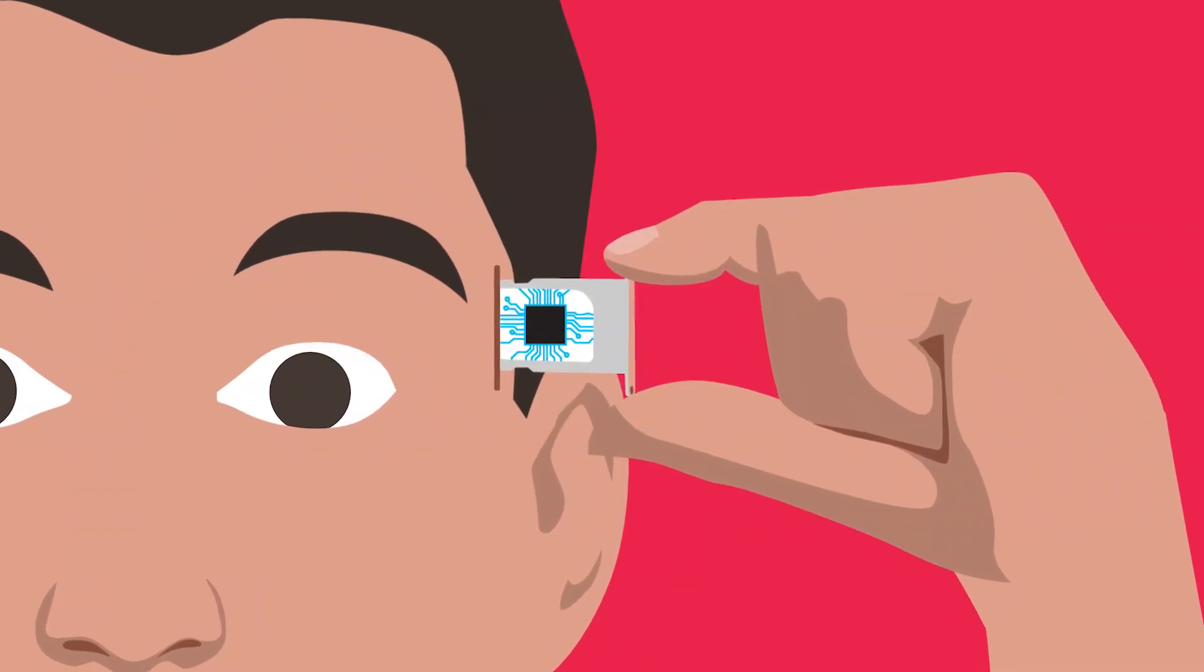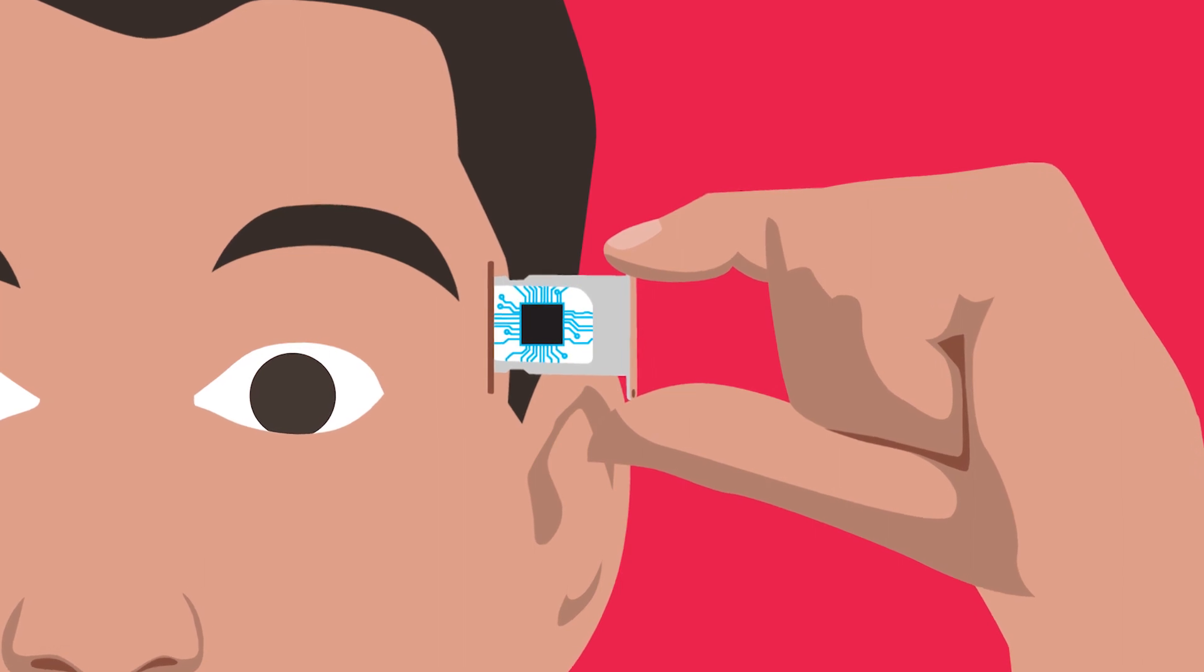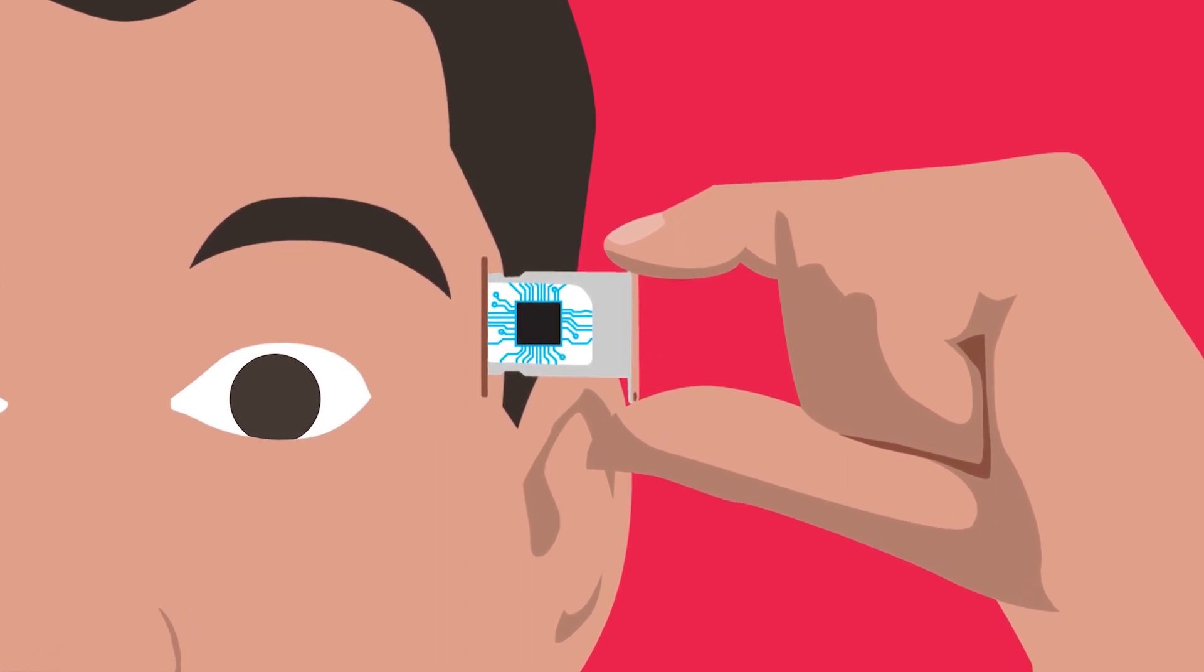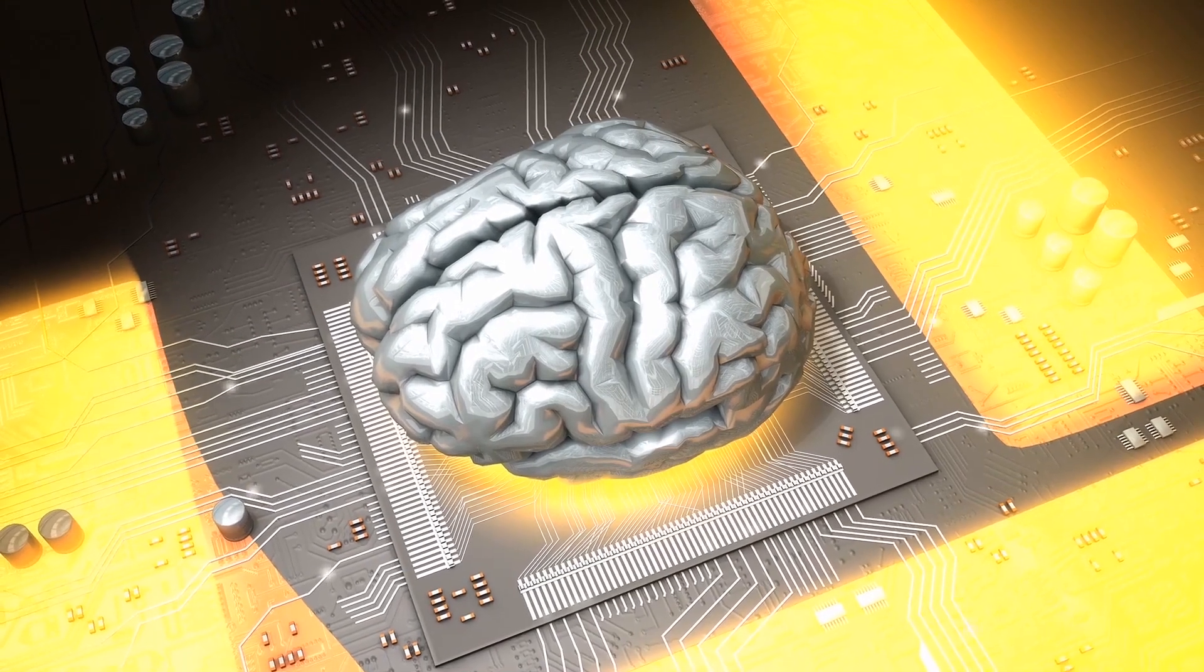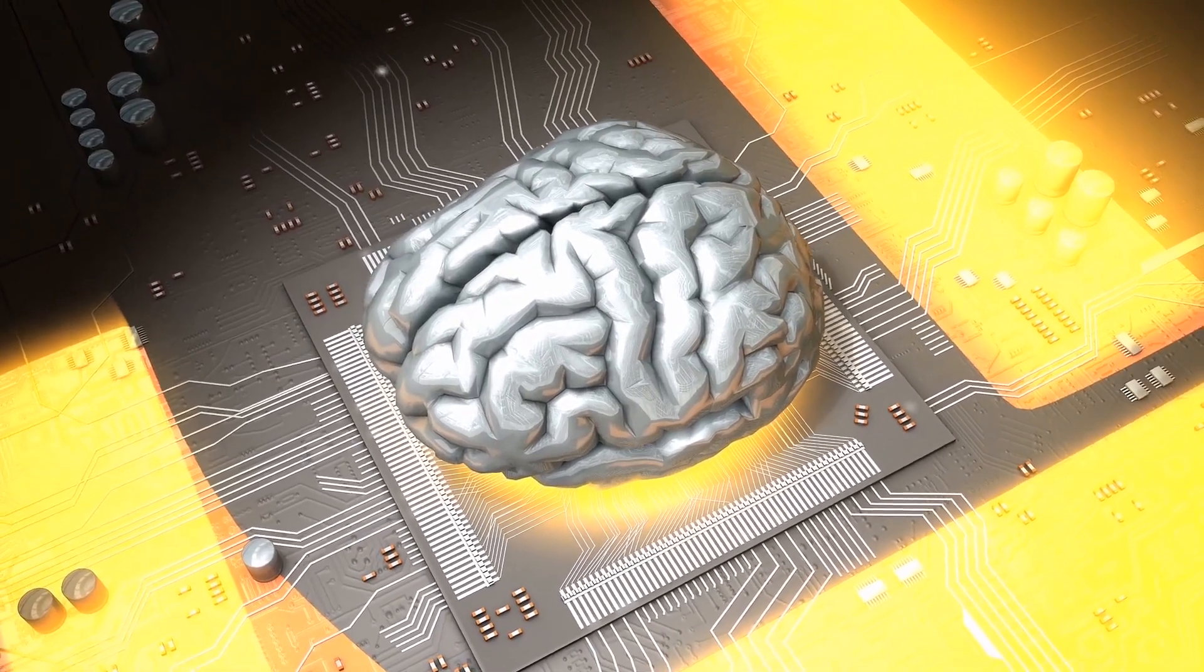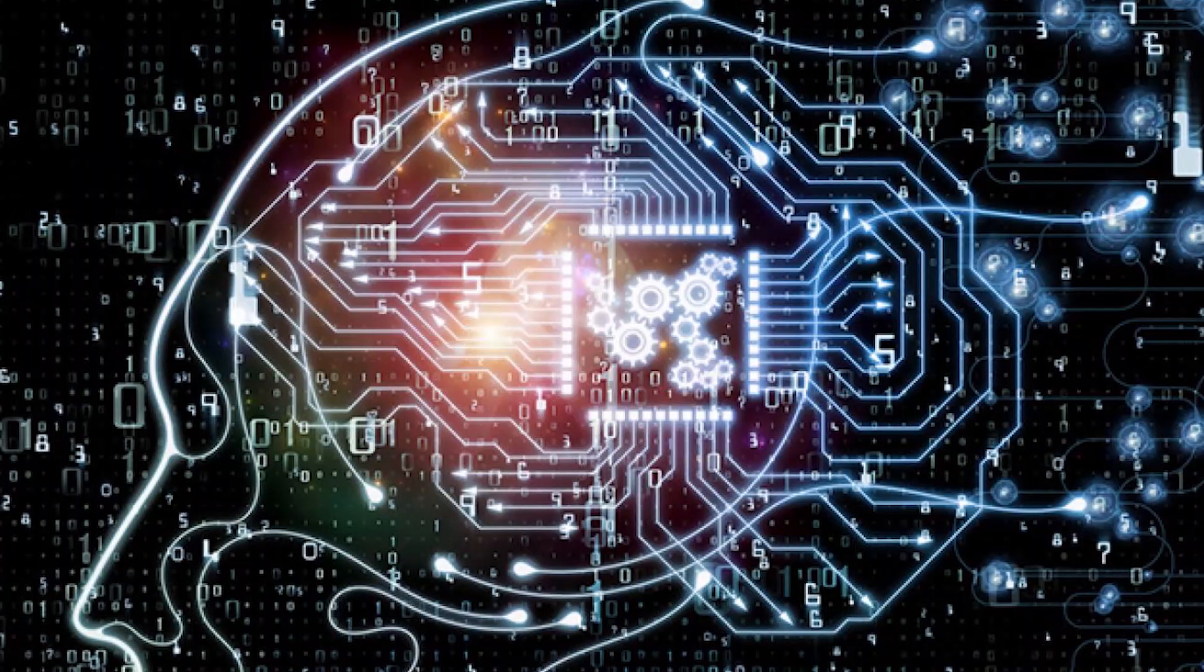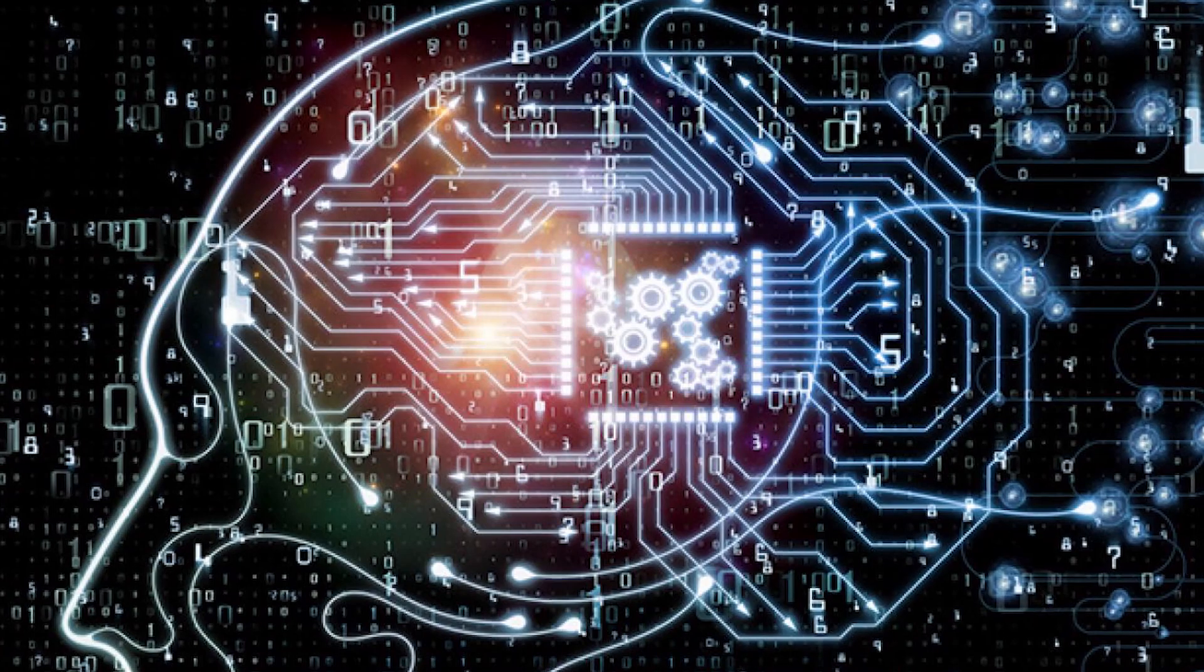Essentially, someone else using the Neuralink chip in your brain to control your actions when you're incapable of making those actions yourself. While currently your own neurons are more than powerful enough to override any commands given to you by Neuralink, as the technology improves, who knows how powerful it can get.